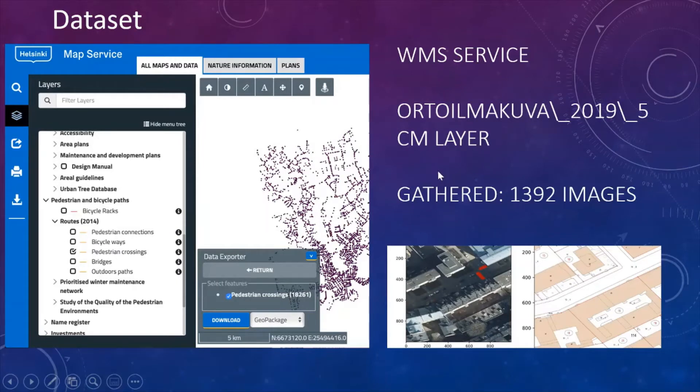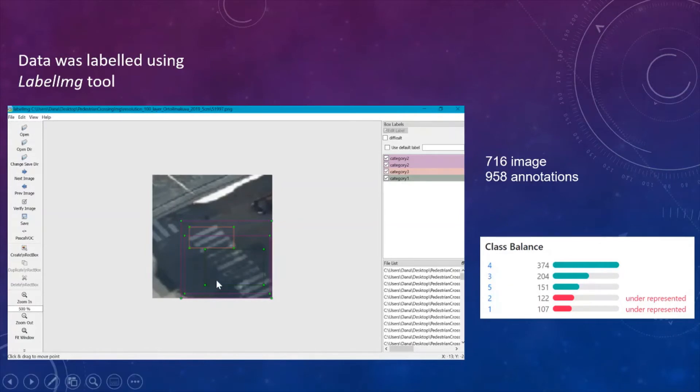As was mentioned before, the City of Helsinki has its own service to extract geospatial data. With the help of this service, we could extract 1392 images. Next, we labeled the data manually. We utilized the LabelImg tool, which provides us help in drawing the bounding box, then assigning the category. In total, we got 716 images with 958 annotations. This was because some images contained more than one road marking. And also, we discarded some images that were poor quality or there were some duplicated images.